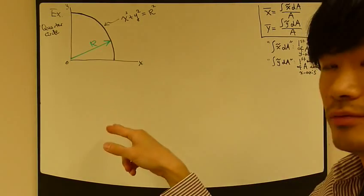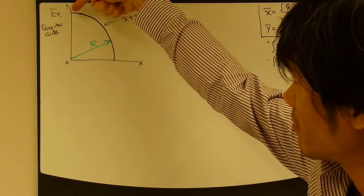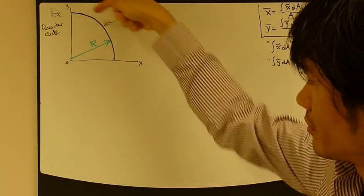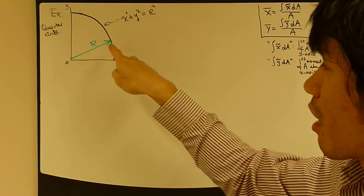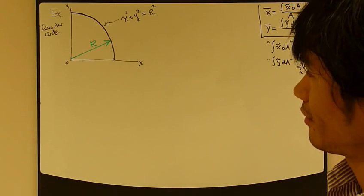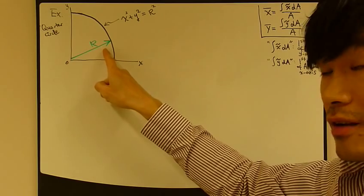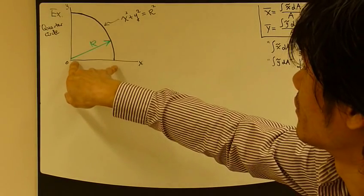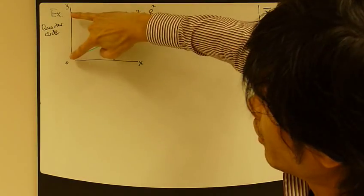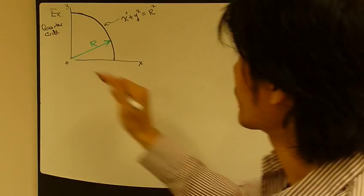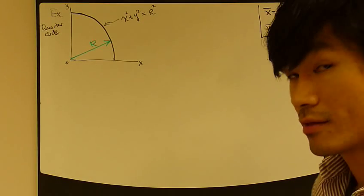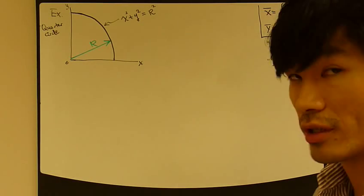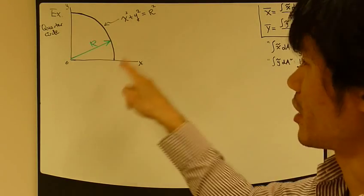Now since this is a quarter circle, I have an equation to describe this line right here, the circumference, which is x squared plus y squared equals r squared. Now r is a constant. So this is r and this is also r.